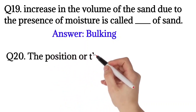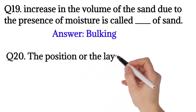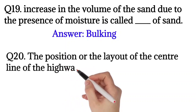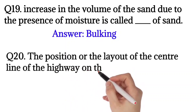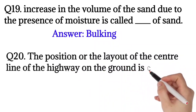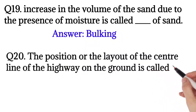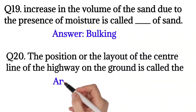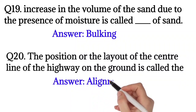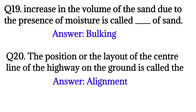Question number twenty: the position or layout of the center line of a highway on the ground is called alignment. So the answer is alignment. Thank you for watching.